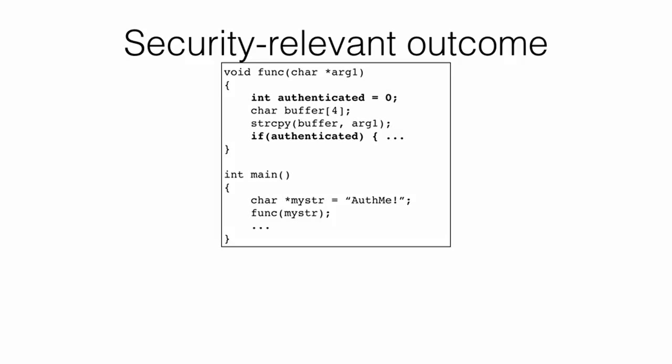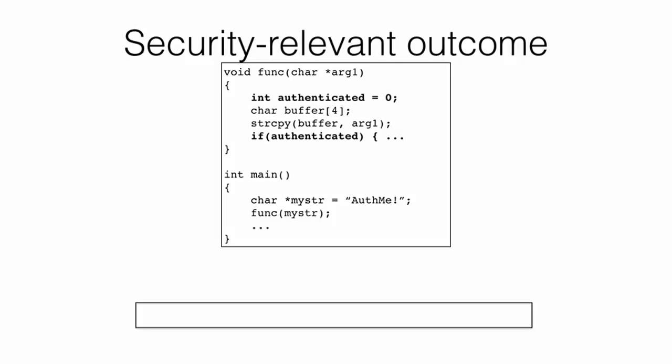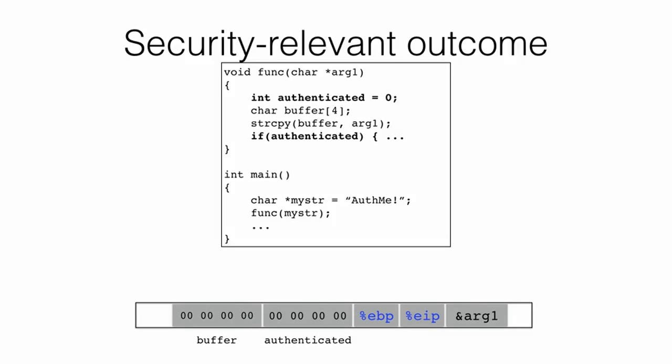Revisiting the three security properties — confidentiality, integrity, and availability — stack smashing is a violation of integrity: it corrupts important data in the program and enables arbitrary code to run on behalf of the attacker. Stack smashing can also reduce availability by crashing the program or injecting code to make it unresponsive. For the remainder of this unit, we will look at other attacks that are variations of stack smashing, taking advantage of memory bugs in different places and sometimes reading memory illicitly rather than writing to it.